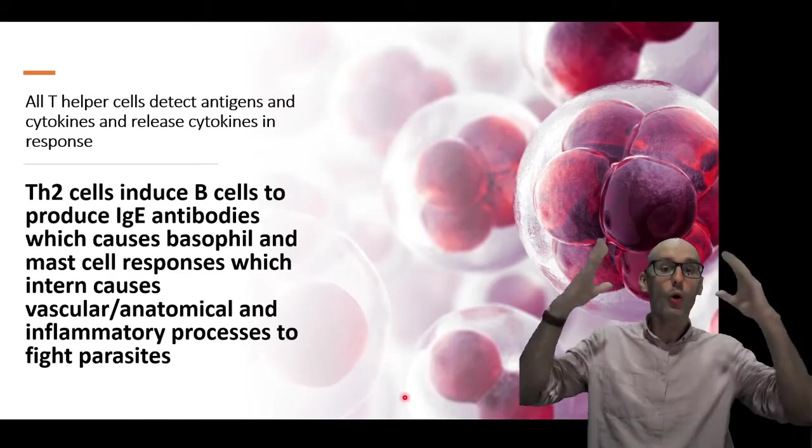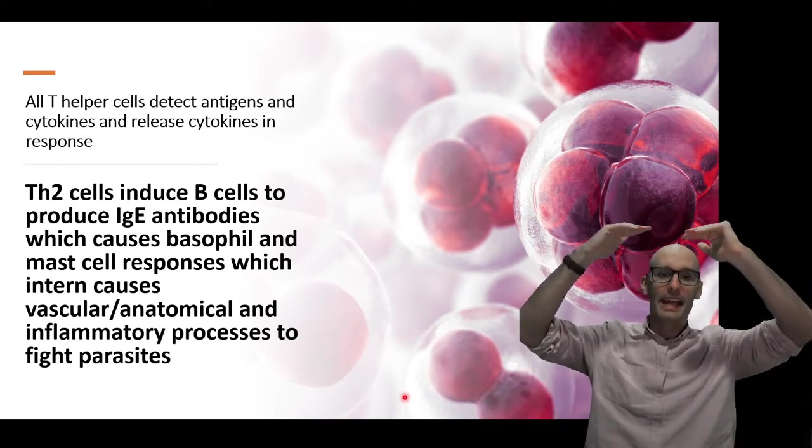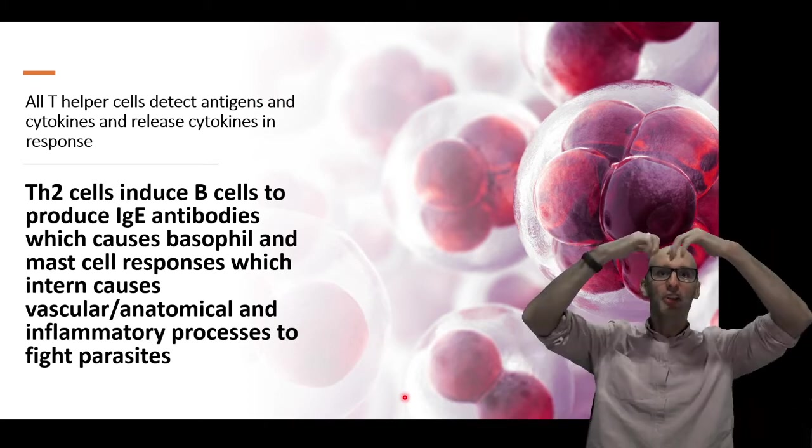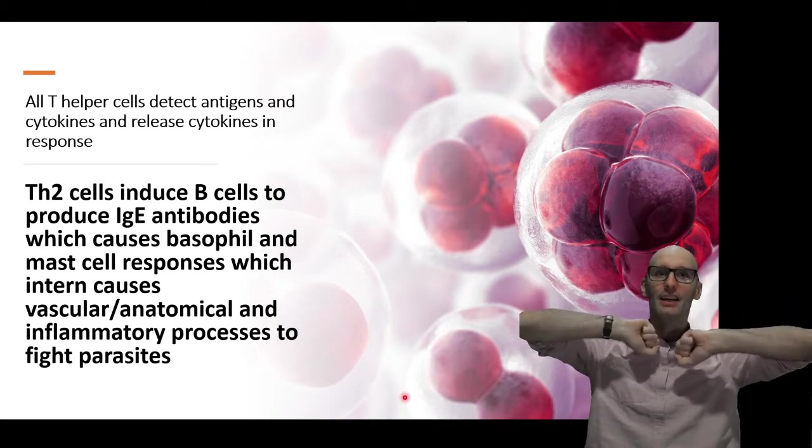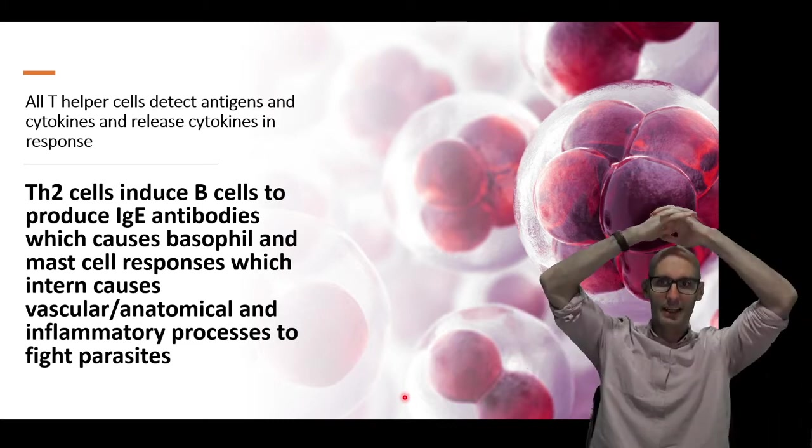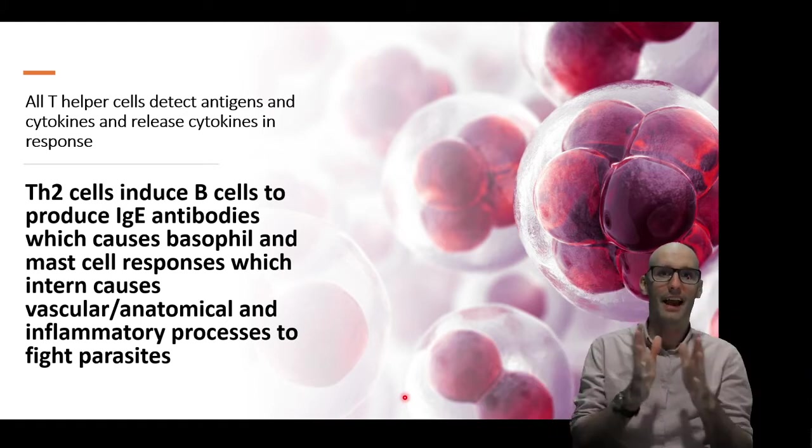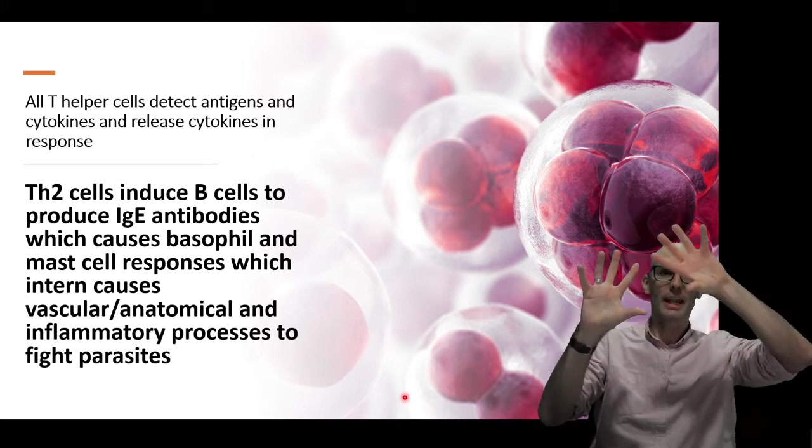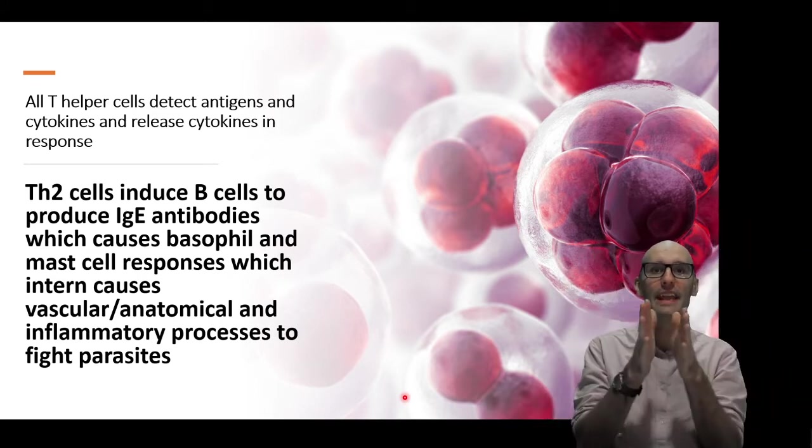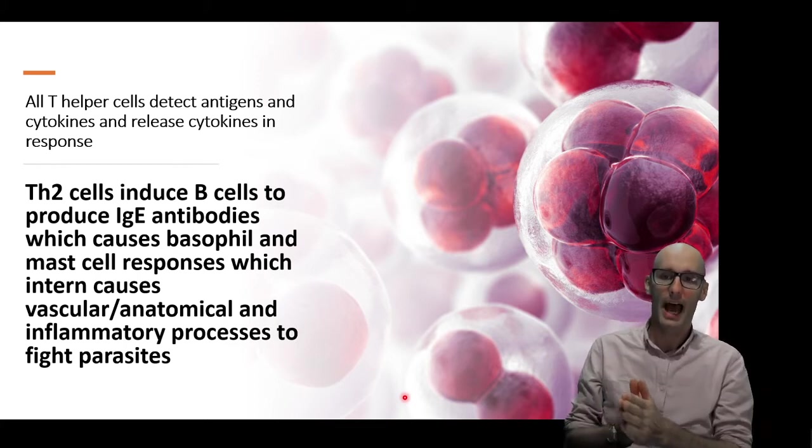So all T helper cells do, all of them, all the subtypes, they take a look at what cytokines are currently in the tissue milieu, in the circulation and in the extracellular fluid, and what antigens have they been exposed to. And they compute it together. I actually like to think of it, it's a lot like a neuron. It's evaluating a lot of inputs and then having a quite simple output.